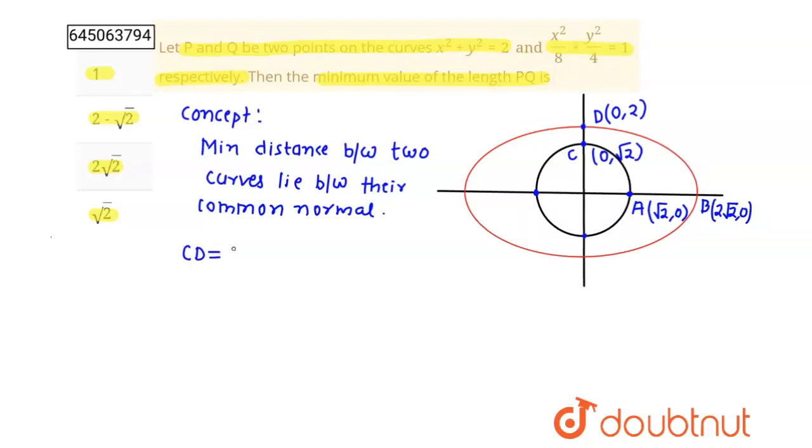CD is equals to 2 minus root 2 and AB distance is equals to 2 root 2 minus root 2 which is root 2. This is 1.4 and this is 2 minus 1.4 around 0.6 so this is minimum. It means that our C point is P point as per given in question and D point is our Q point and shortest distance between PQ is 2 minus root 2. Our second option is correct thank you students.